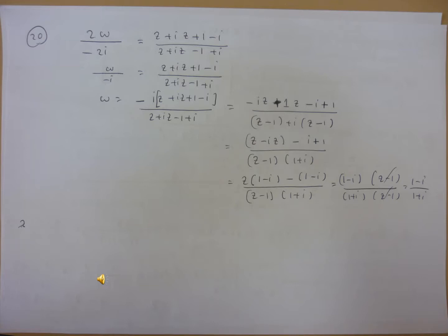We continue to solve the z problem. So we have 2 omega divided by minus 2i equals, so the right-hand side is z plus i, z plus 1 minus i, divided by z plus i, z minus 1 plus i.